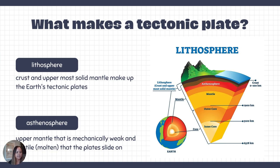We call tectonic plates lithospheric plates because they are composed of lithosphere. Lithosphere is crust and the uppermost solid mantle — so it's not just the crust, it's a little bit of the mantle as well. It slides along something called the asthenosphere, which is the upper mantle that is mechanically weak and ductile — it's molten and it allows for movement.